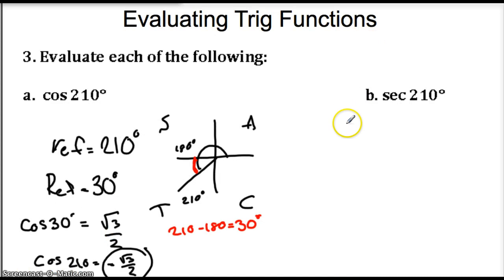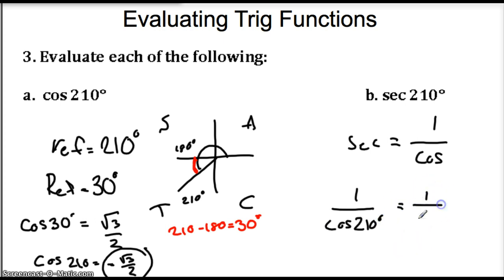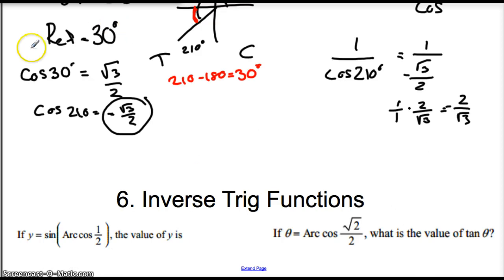The secant is the reciprocal function — secant equals 1 over cosine. To find the secant of 210, you do 1 over the cosine of 210, which is 1 over negative √3/2. You flip it and multiply: that's 1 over 1 times 2 over √3, giving 2 over √3 — and it's negative. Remember, you can't have a radical on the bottom, so simplify further. Good luck, students!